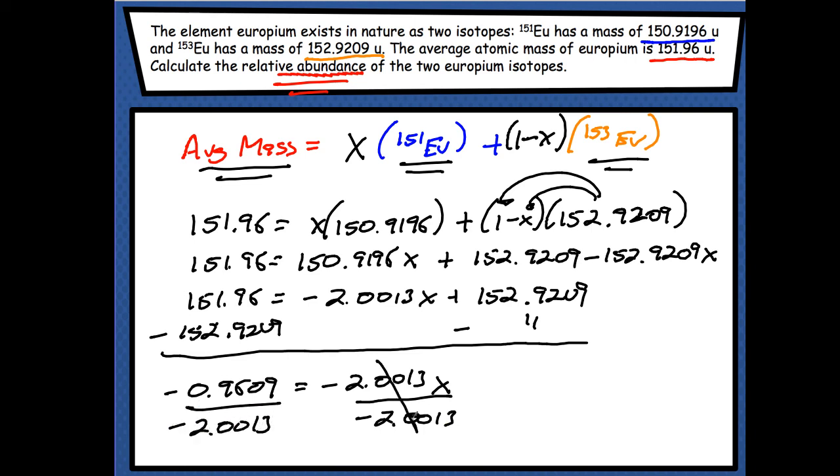Those cross out. My x is going to equal, plug it in. And since we're dealing with percentage decimal points, I get like 0.48 as my x.